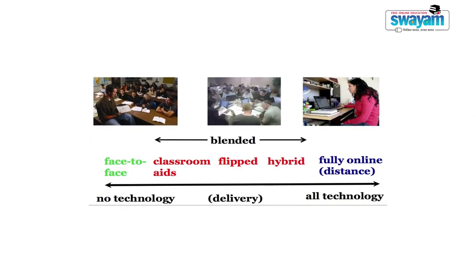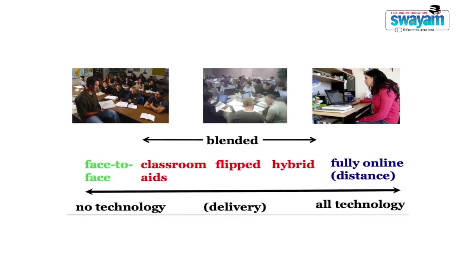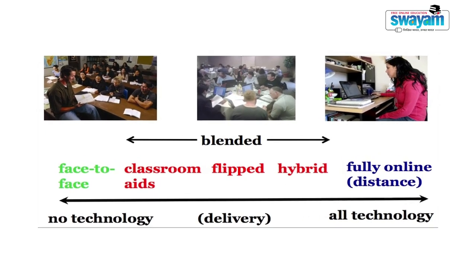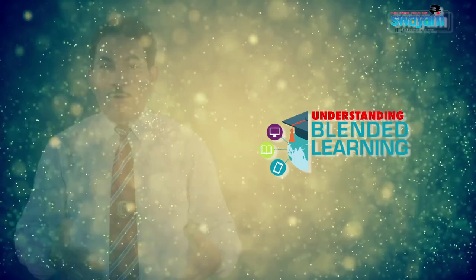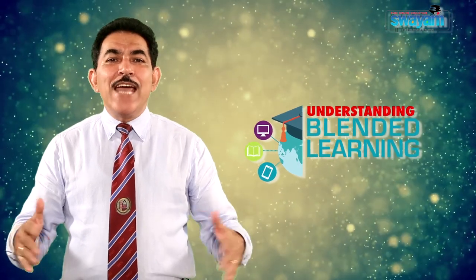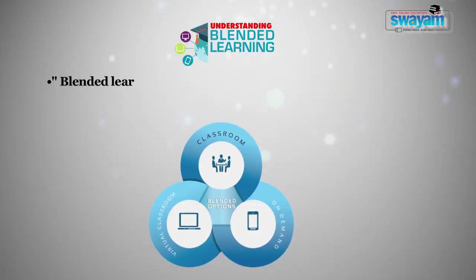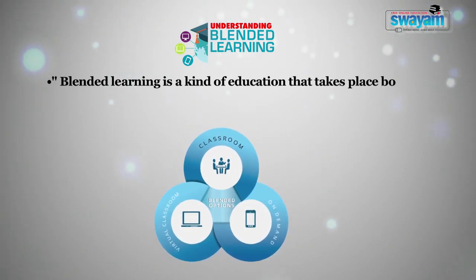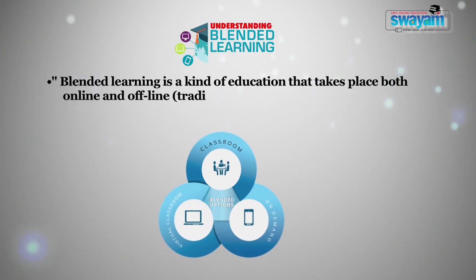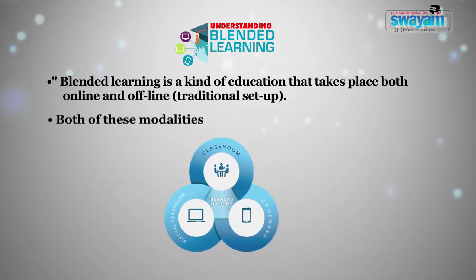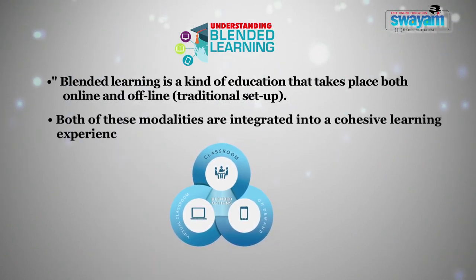Now let's understand what is hybrid learning. Is it different from blended learning or flipped classroom learning? Over the past two decades, advances in web and video content delivery have aided the growth of technology-based teaching and learning methodologies. Blended learning is a kind of education that takes place both online and offline — that is, in a traditional setup. Both of these modalities are integrated into a cohesive learning experience for the students.